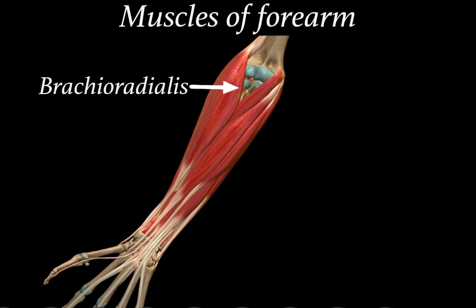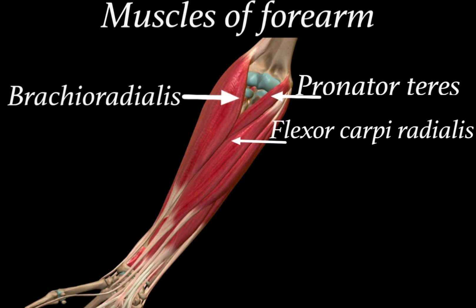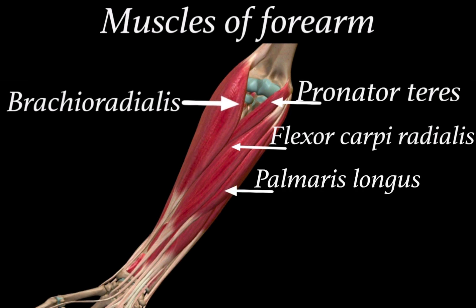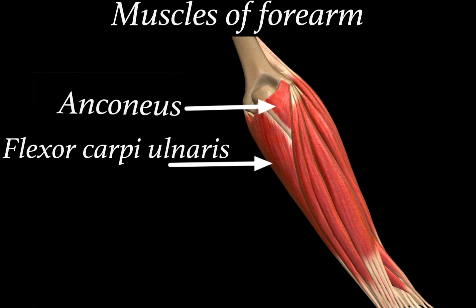Muscles of the forearm — the first muscle is the brachioradialis, which is related to the radius bone. We also have pronator teres. Both brachioradialis and pronator teres form the boundaries of the cubital fossa. Below pronator teres we find flexor carpi radialis, and further below we find palmaris longus and flexor carpi ulnaris. On the posterior view above flexor carpi ulnaris we have the anconeus muscle.